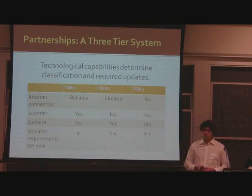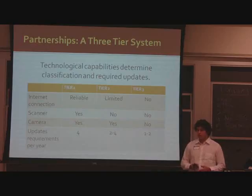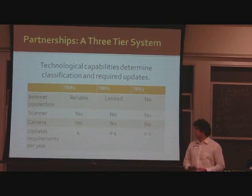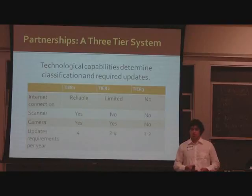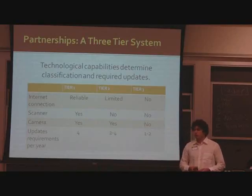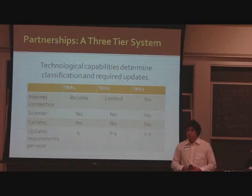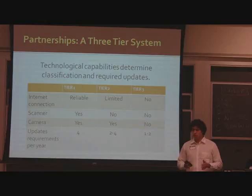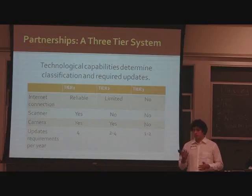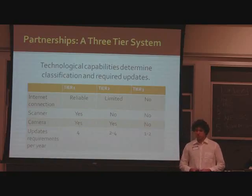And finally, in the third tier, we include those NGOs that do not have access to internet connections or a camera, and they will be required to provide between one and two days a year. This is important because sometimes donors feel discouraged when NGOs are not able to provide the number of days that they are currently required to.